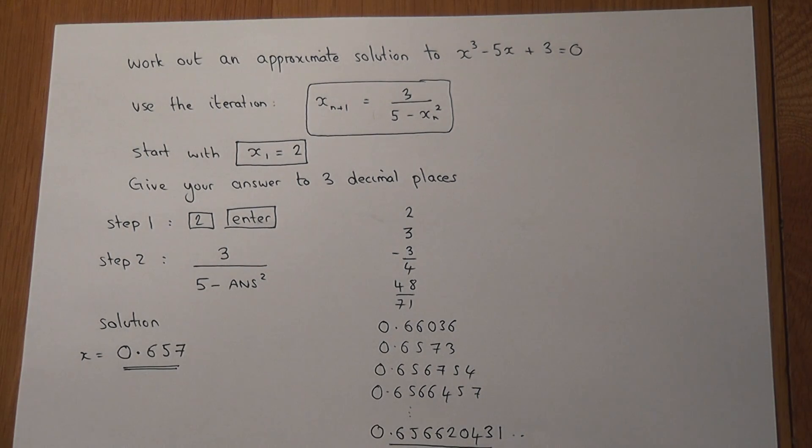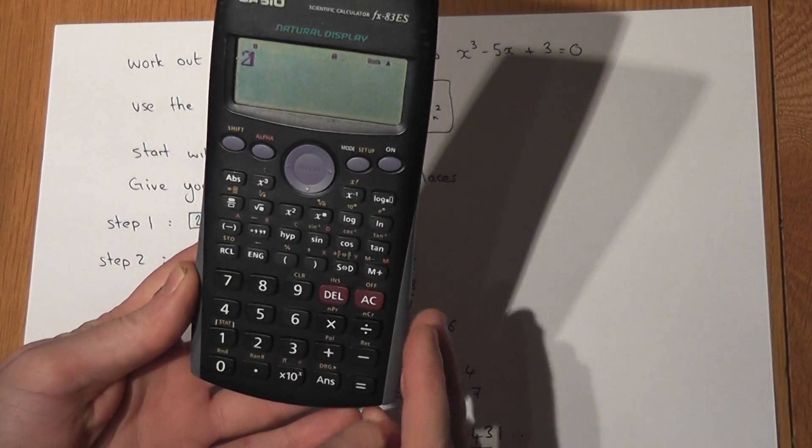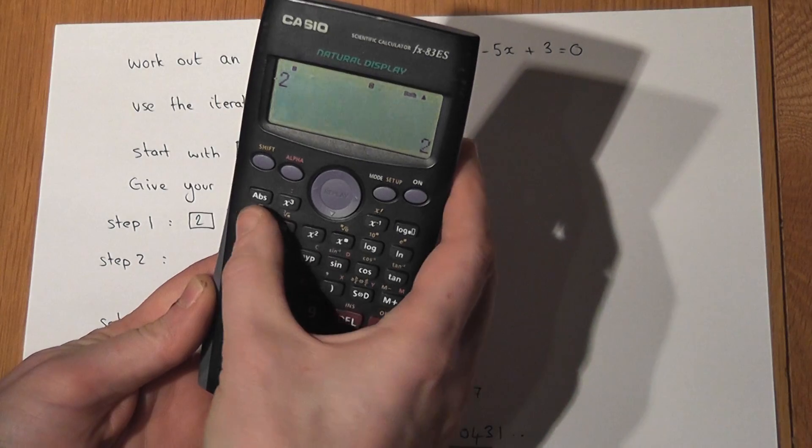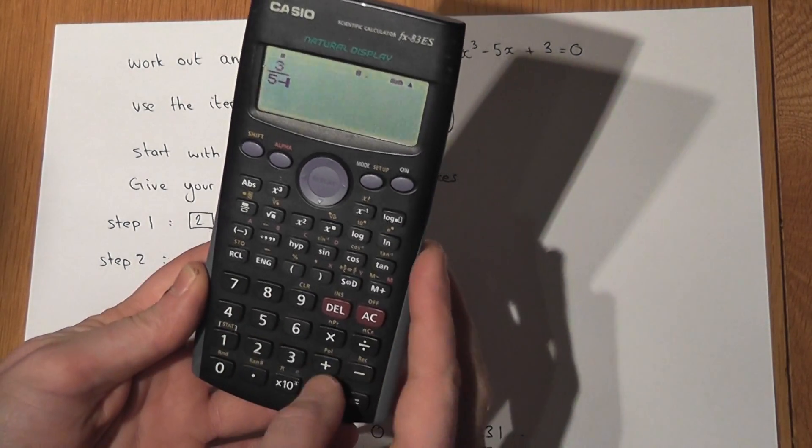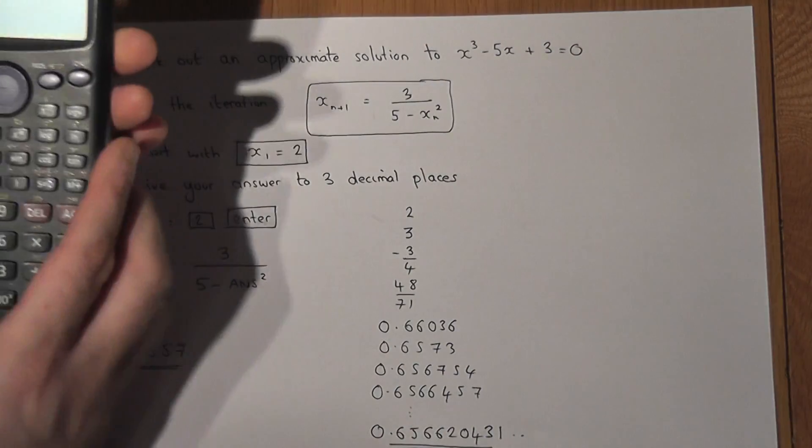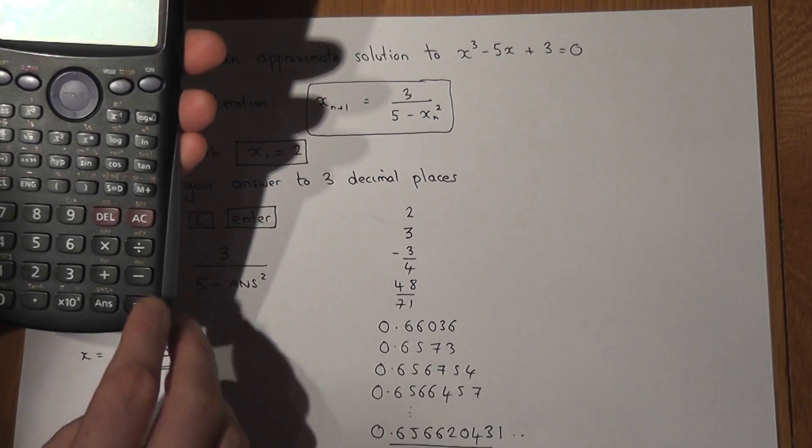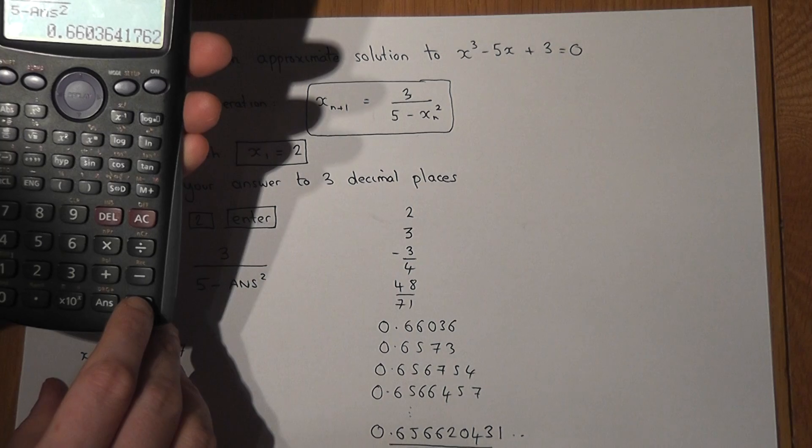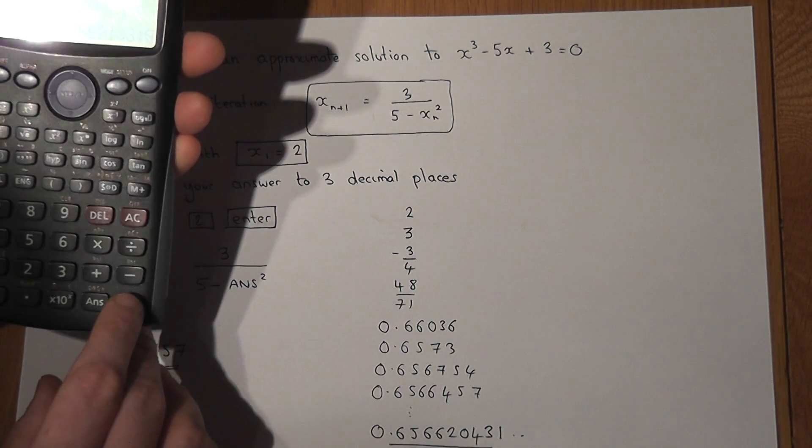Once again to show this on the calculator: I put in 2 and press enter. I then enter the formula 3 over 5 minus xₙ squared and I then press enter. What appears on the calculator are each of the numbers, and they gradually start to converge to an answer.